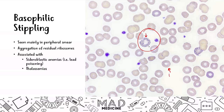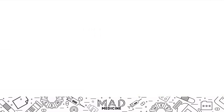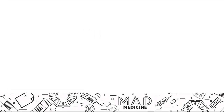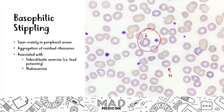On the peripheral smear, you can compare normal RBCs to hypochromatic RBCs, and then you can see basophilic stippling — the retained ribosomal RNA — within the red blood cells.